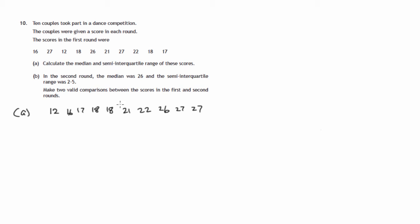So half of 10 is 5. 1, 2, 3, 4, 5. That means there isn't a middle value. So the median must be the mean of these two middle values.